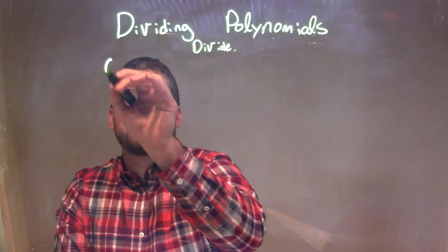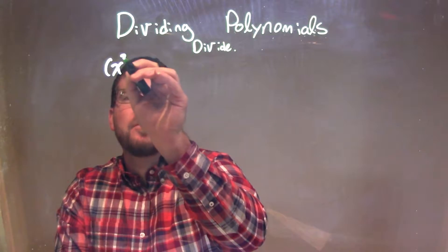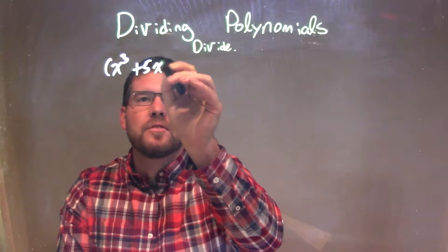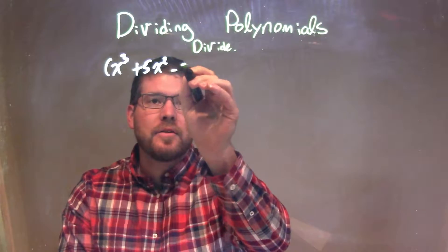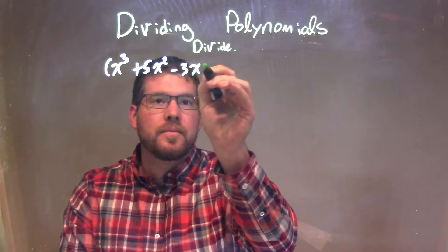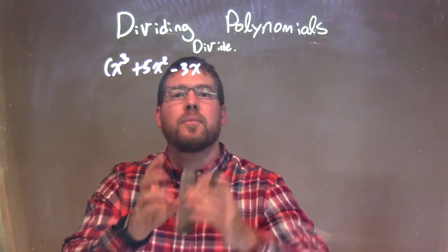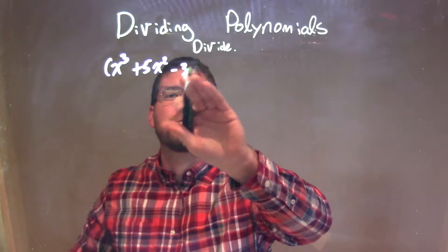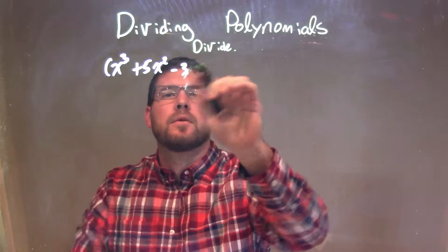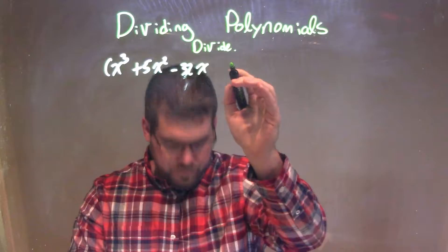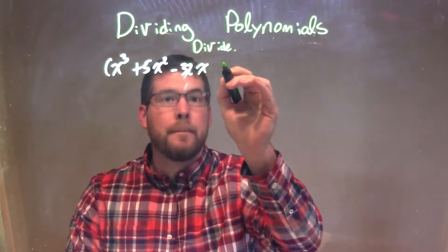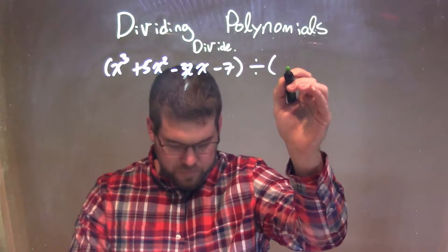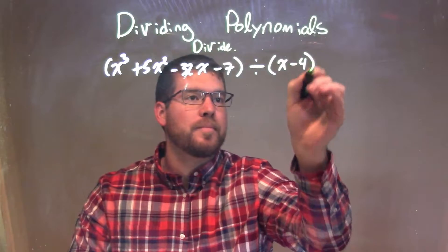So if I was given this problem: x to the third plus 5x squared minus 32x minus 7, divided by x minus 4.